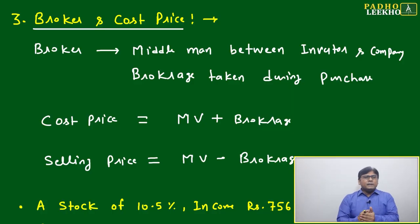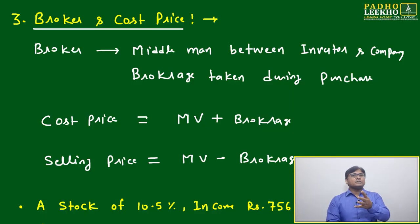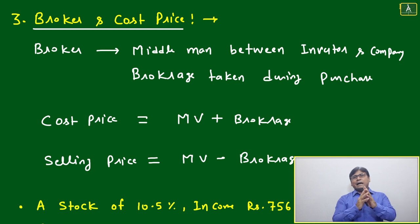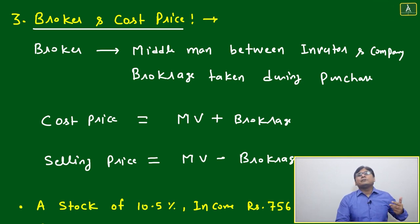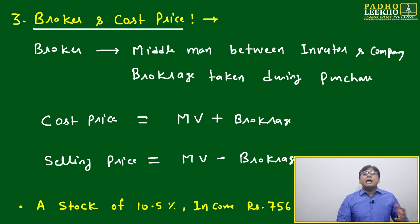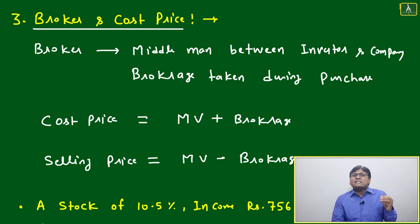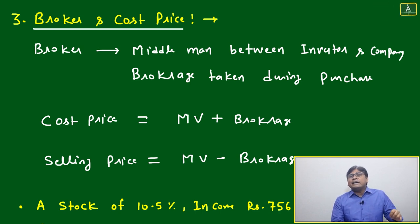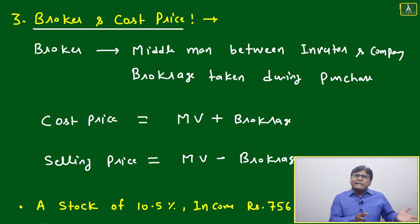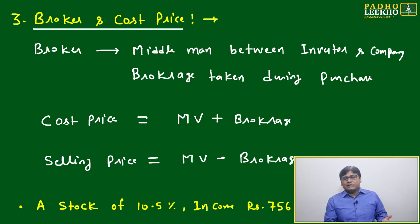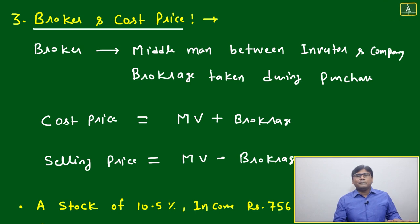Now we'll come to two more terminology. Don't be fed up — I've told you hardly five or six variables, because in this chapter many students feel there are so many variables and definitions. No need to worry. I told you: market value, face value, rate of return, dividend, total investment, total income — that's only five or six variables you have to deal with. All are interrelated — very simple mathematics, either percentage or multiplication.